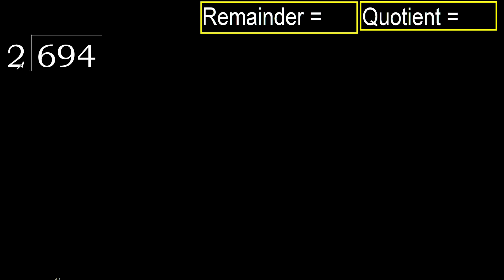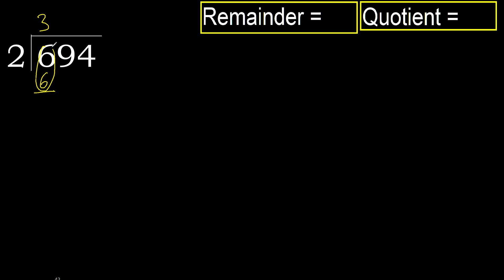694 divided by 2. 6 is not less, therefore with 6: 2 multiplied by which number is nearest to 6 but not greater? 2 multiplied by 4 is 8, 8 is greater. Multiply by 3: 6 is not greater. Subtract 6 minus 6 equals 0.